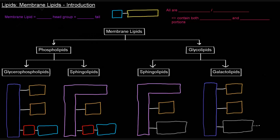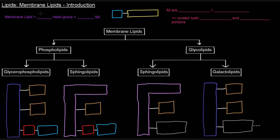In this video, I want to discuss membrane lipids and introduce them. So what is a membrane lipid? Membrane lipids are lipids that make up membranes — that should be pretty intuitive. They basically contain a polar head group and a hydrophobic or nonpolar tail. That's what I've drawn here — a representation of what a membrane lipid should contain.